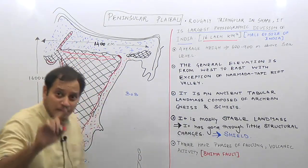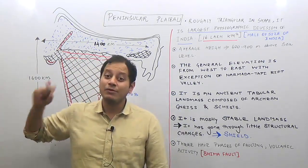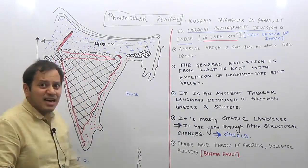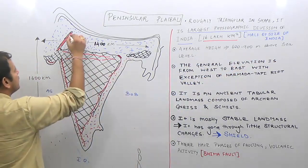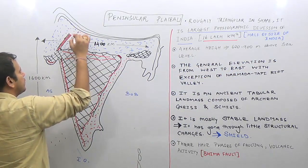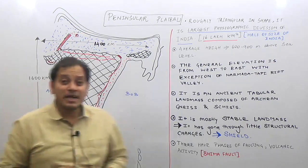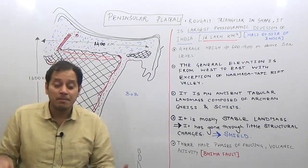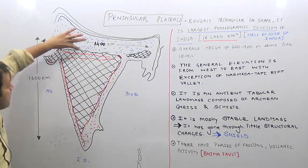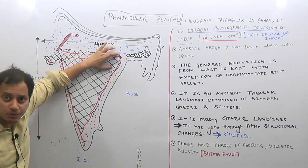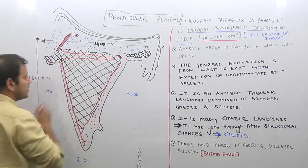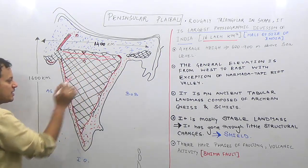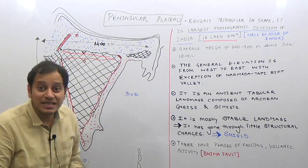The boundaries of the peninsular plateau are formed by the Aravalli ranges, which extend right up to New Delhi and are therefore also known as the Delhi Ridge. It also consists of the central highland region, the Marwar region in Rajasthan, the Malwa plateau, Bundelkhand, Chota Nagpur plateau, the Vindhya mountain ranges, and the Satpura mountain ranges.